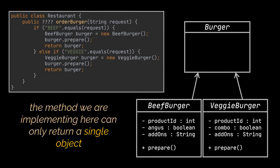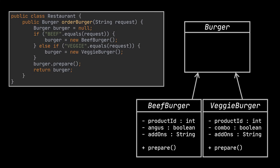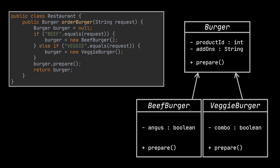Therefore if these products do not have a common base class or interface, we won't be able to proceed with such an implementation. So let's create a base class for our products and try to use it within the code of our application. This class will be the burger class. On top of abstracting our two products into a single class, we can also extract the common behaviors of these products to this class as they are already implementing them.